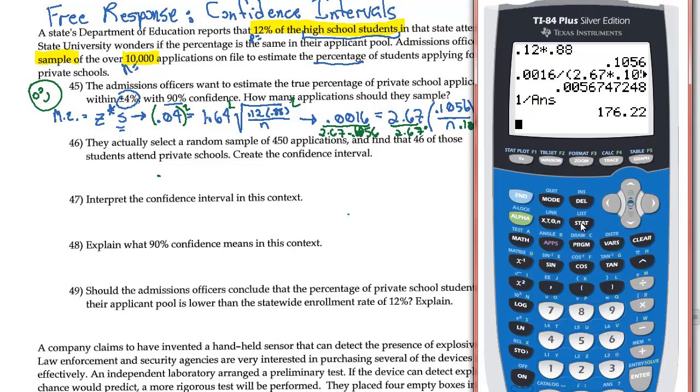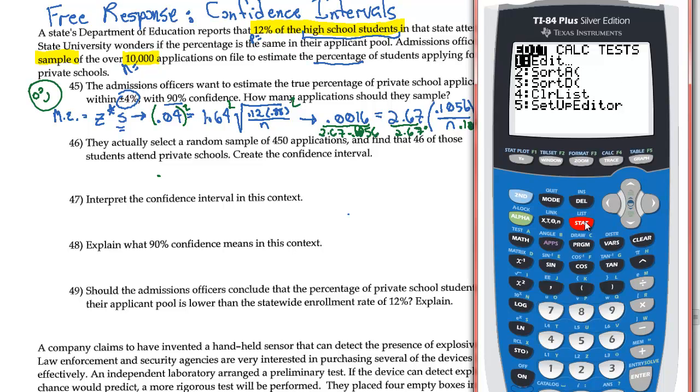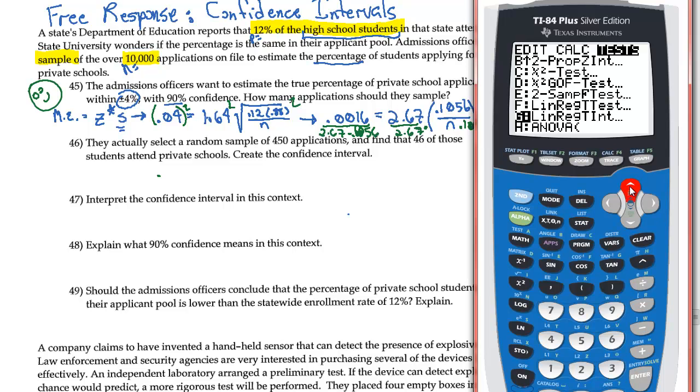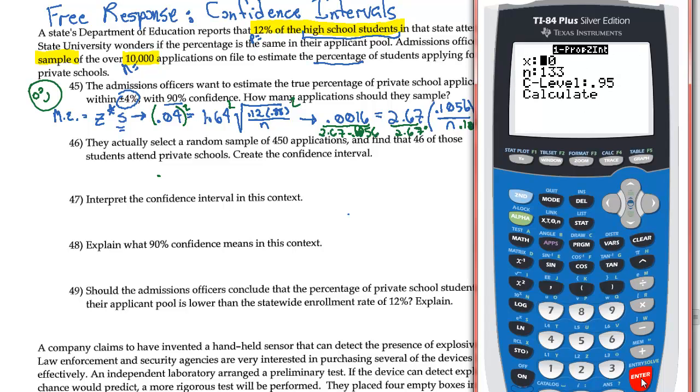You want to go ahead and go to Stat, and you want to go over to Test. And for a confidence interval, I'm going to scroll up to A, which is my one proportion Z interval. One proportion Z interval, that's what I'm looking for. And so now,